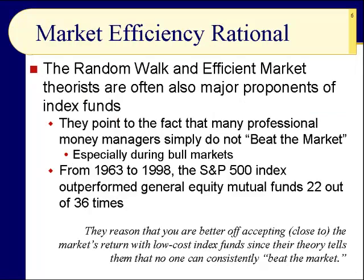Slide number six: the random walk and efficient market theorists are often major proponents of index funds. They point to the fact that many professional money managers simply do not beat the market, especially during bull markets. The indices usually beat the majority of money managers, especially mutual fund managers. From 1963 to 1998, the S&P 500 index outperformed general equity mutual funds 22 out of 36 times. These people reason that you're better off accepting close to the market's return with low-cost index funds.